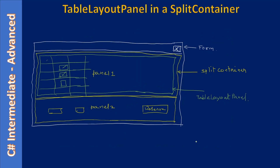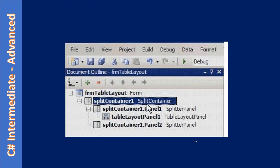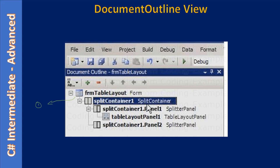In the previous video we added the split container as well as the table layout panel. The document outline view will look like this — you can see there is a form, and this form contains a split container. The split container contains two more containers: panel one, which we can call 3A, and one more splitter, 3B. We didn't place any container in the panel two part.